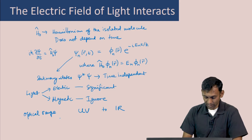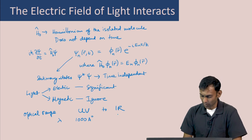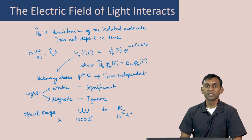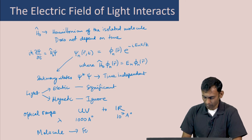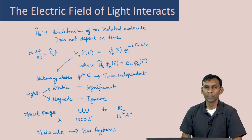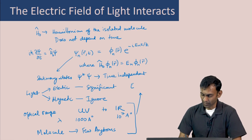Let us quantify the interaction of the electric field with the molecule. We assume that the light is in the optical range — by which I mean between the UV to the IR range. The corresponding wavelength of UV is about 1000 Å and the IR is about 10^7 Å. Now, the size of the molecule itself is a few angstroms. This implies that the electric field is constant at every part of the molecule.